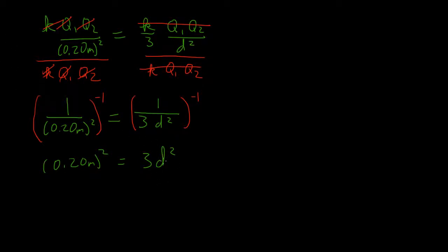But we want to solve this for D, so I'm going to start by dividing by 3. The 3's will cancel on both sides. And we'll get 0.20 meters squared over 3 equals D squared.